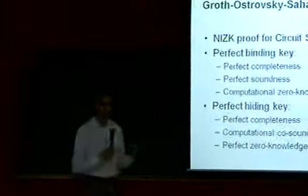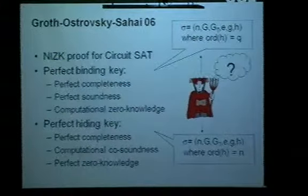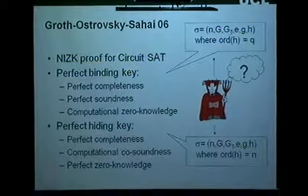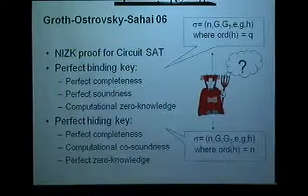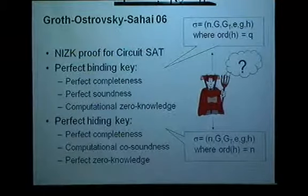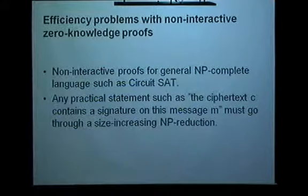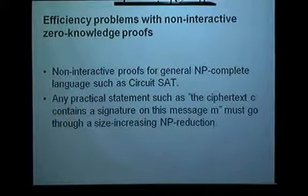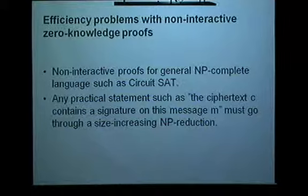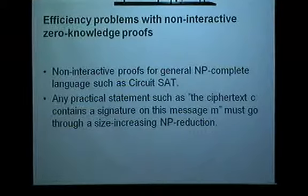Perfect zero-knowledge is a property that actually came really easily once you start using pairings — it was just a question of whether we start with one common reference string or another. Now in the second part of the talk I want to talk about efficiency. I want to move toward something that really is practical and you would use in everyday design of cryptographic protocols.